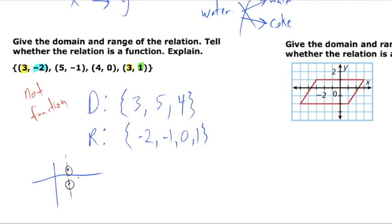If we quickly graphed this, we'd have points at (3, -2) and (3, 1). If we ran a vertical line at x = 3, it would touch the graph at two separate locations — meaning that for that x value there are two points, which doesn't make sense. It's like saying you clicked button number 3 and got out Cheetos and crackers at the same time — that machine is not working. For a function, a single input should only give out a single output.